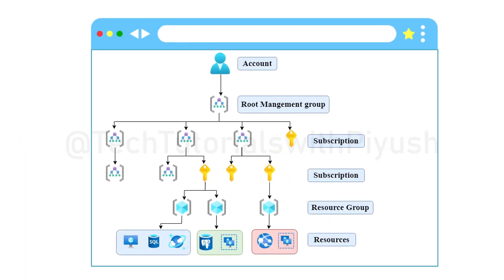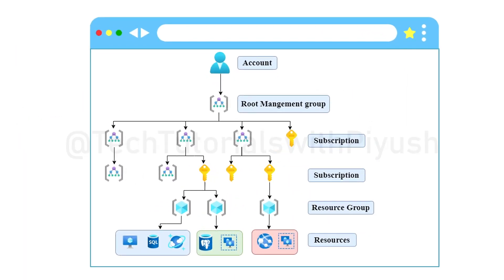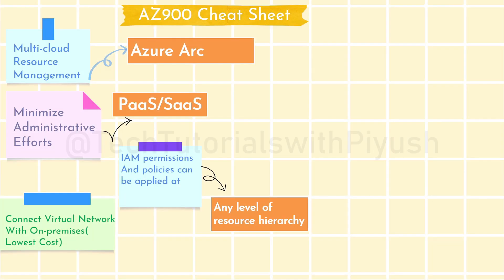Policies and permission roles can be applied at all levels: root management group, subscription level, resource group level, or even at individual resources. When it comes to connecting a virtual network with on-premises at the lowest possible cost, the service you use is VPN Gateway. It does not provide a dedicated network, but it provides an encrypted IPsec VPN tunnel through which you can connect your on-premises network to the Azure virtual network.